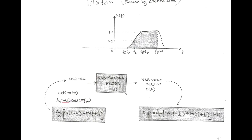The DSB-SC wave is given by Ac·cos(2πFct)·m(t) in the time domain, and in the frequency domain it is Ac/2 · [M(F − Fc) + M(F + Fc)]. The output of the sideband shaping filter with transfer function H(F) is the VSB wave. In the frequency domain, S(F) = Ac/2 · [M(F − Fc) + M(F + Fc)] · H(F). By using the odd symmetry property of the sideband shaping filter, we obtain the vestigial sideband.